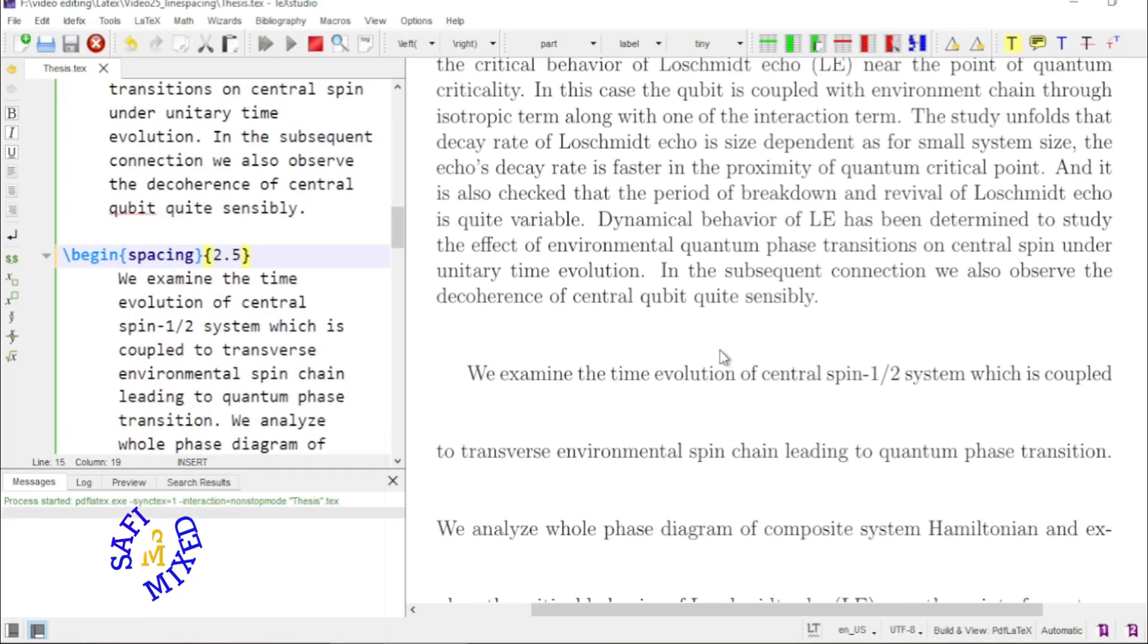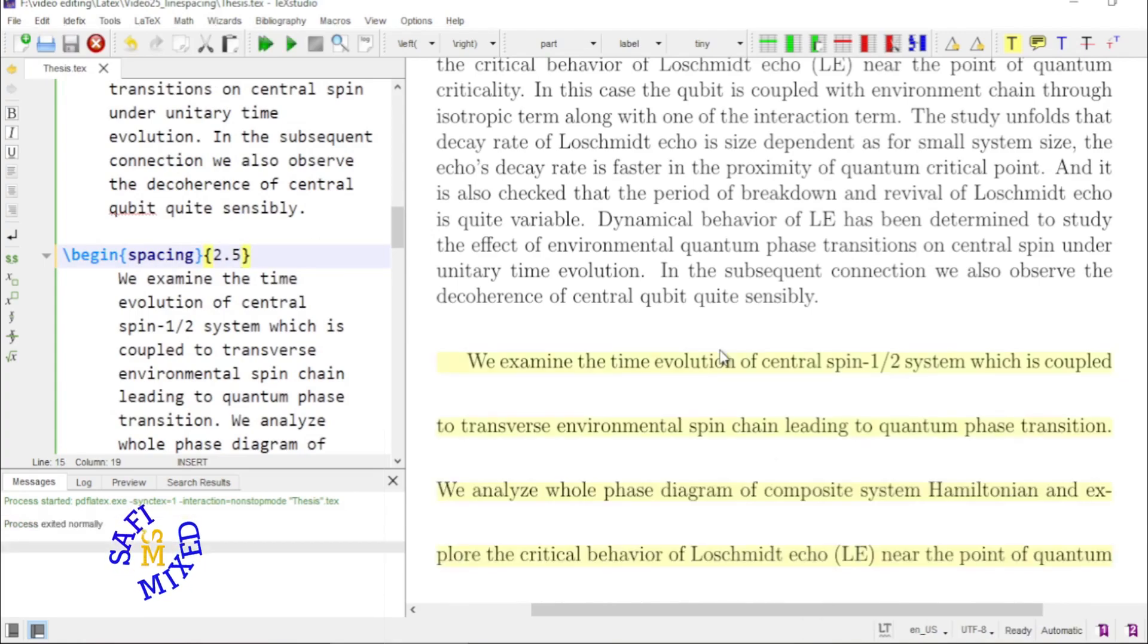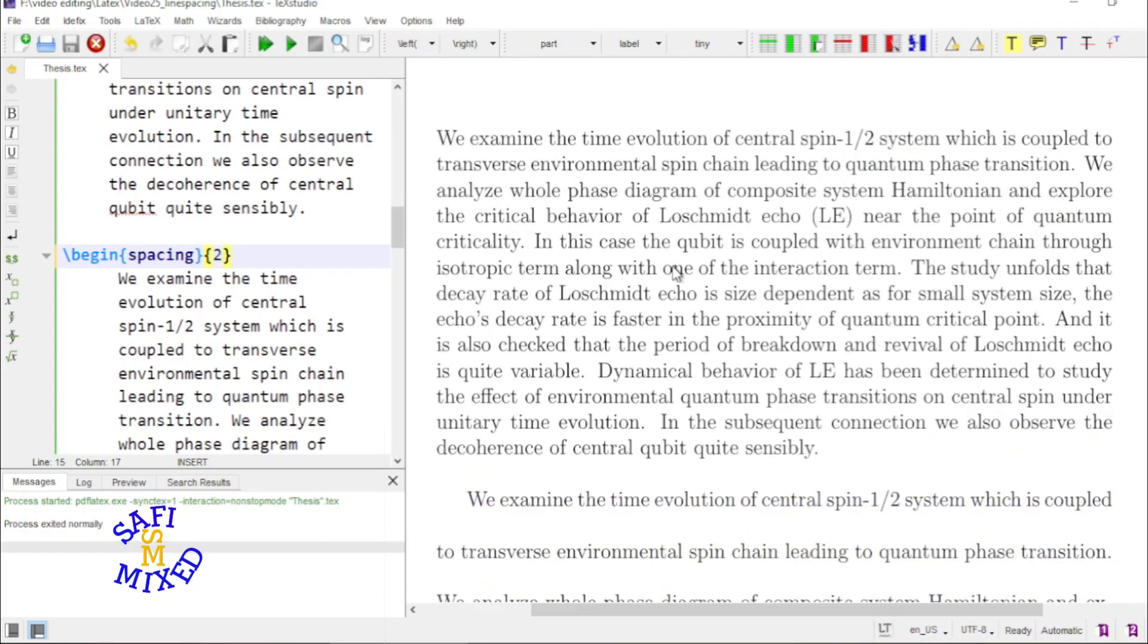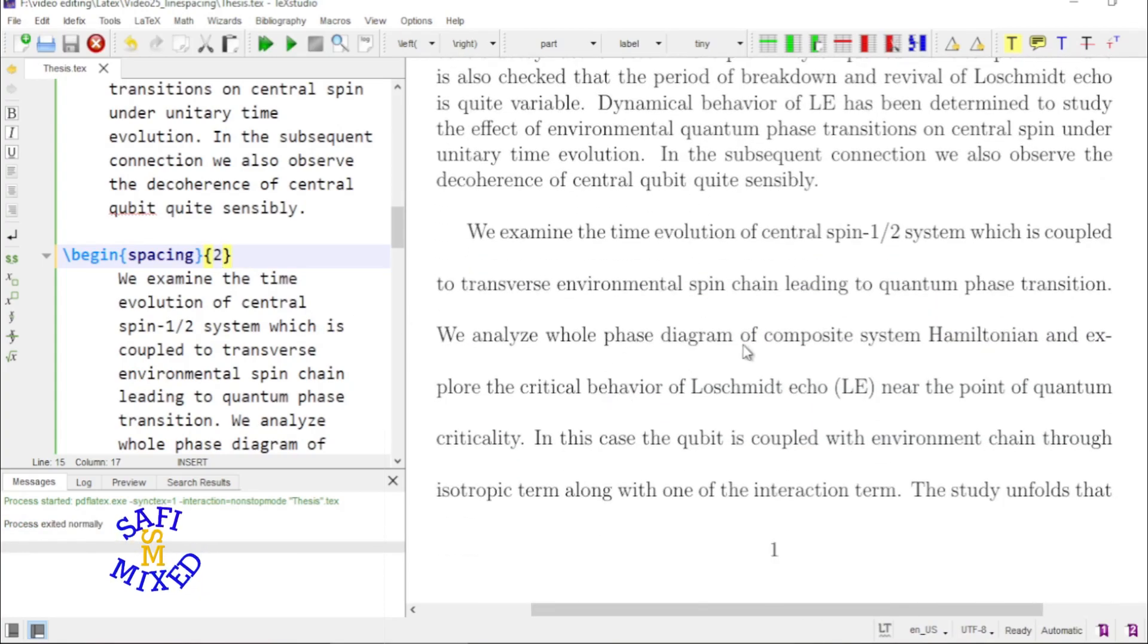Building again the PDF of the document the space is again too large. I can put this to two and this is now the double spacing. This one is single spacing and this one is double spacing.